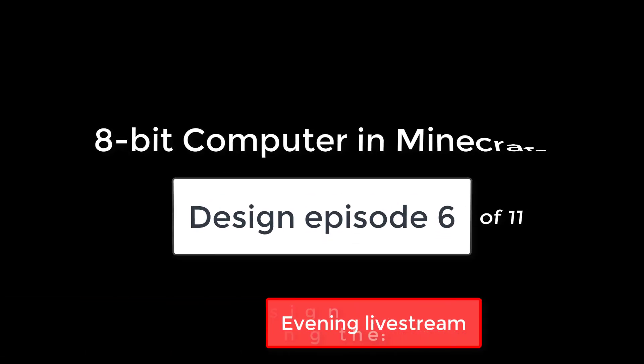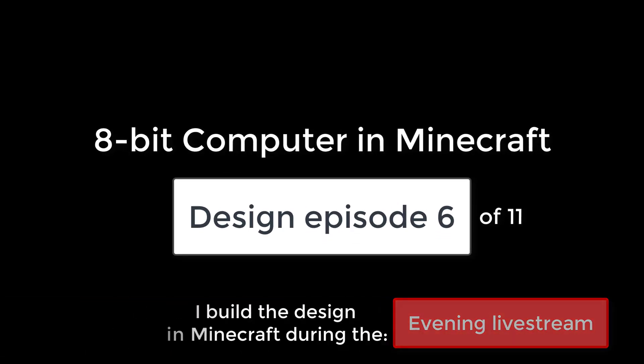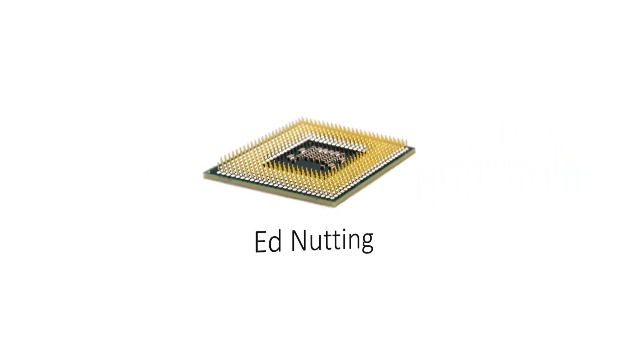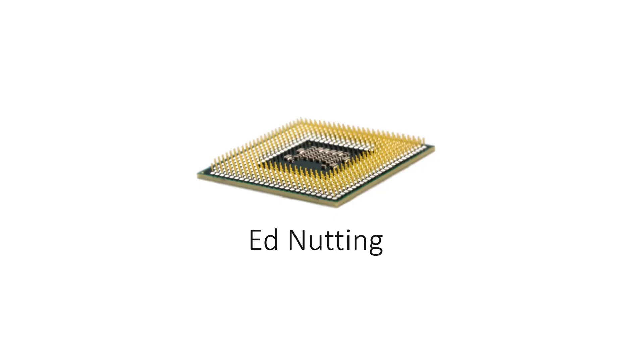Hi everyone, and in this design video we'll be looking at one of the most challenging parts of the build: the memory. In this video we're going to look at the memory of our 8-bit computer, which will take the place of RAM in a real machine — random access memory.